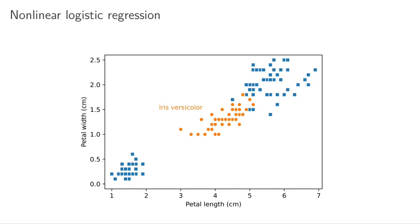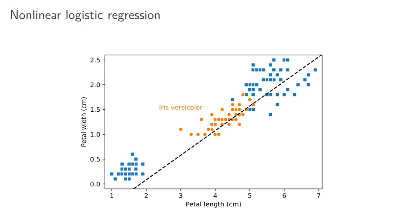Now let's look at classifying iris versicolor — separating them from other irises. If we measure petal length and petal width, it's actually quite difficult because it's not obvious where you'd put a linear boundary. Running binary logistic regression with x as input gives a result where the classifier is doing its best but it's impossible to really separate these irises using just a linear boundary.